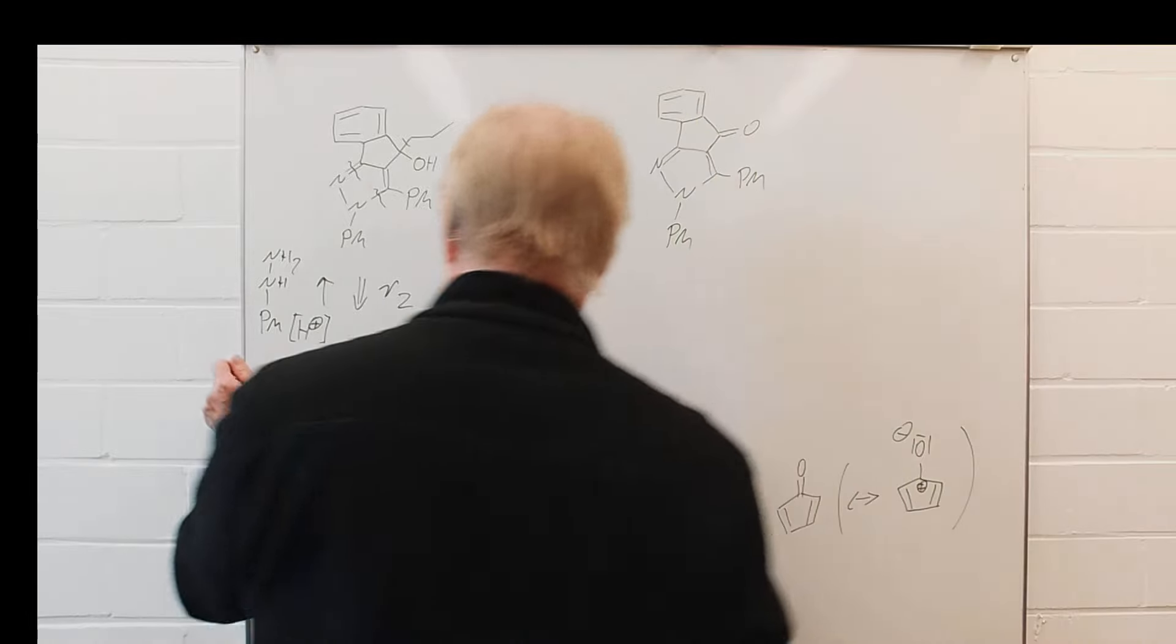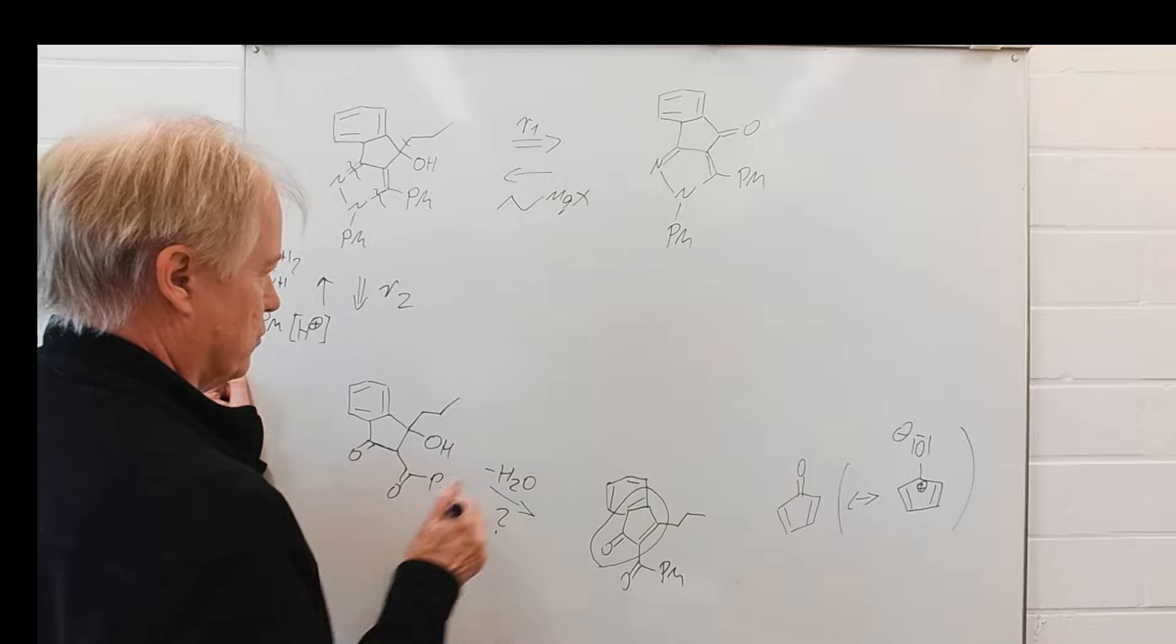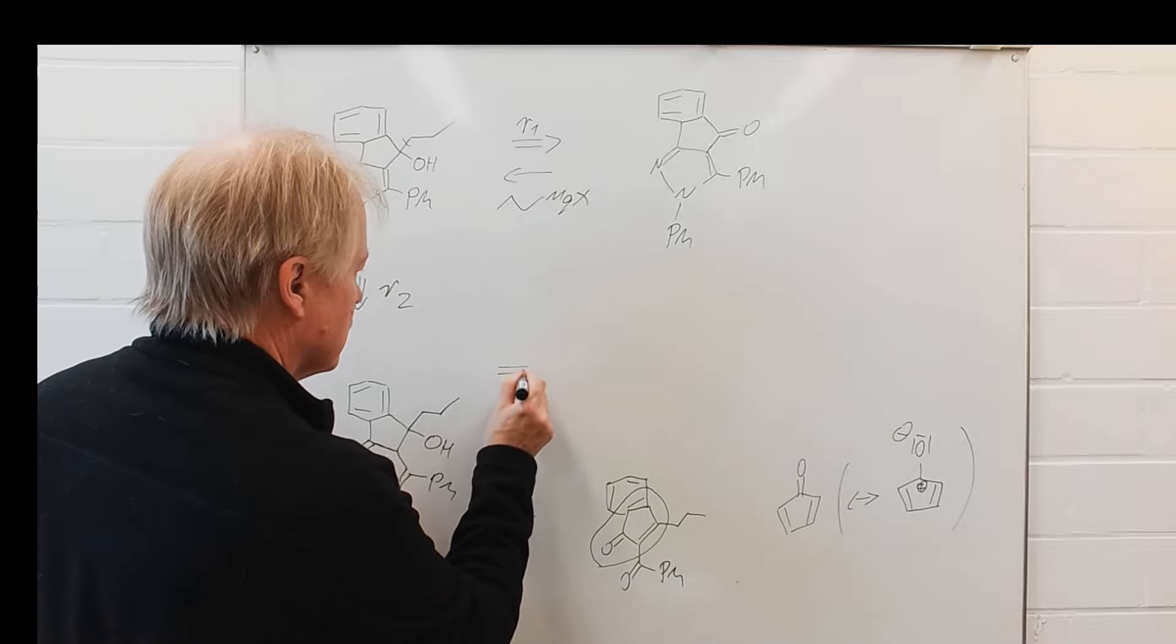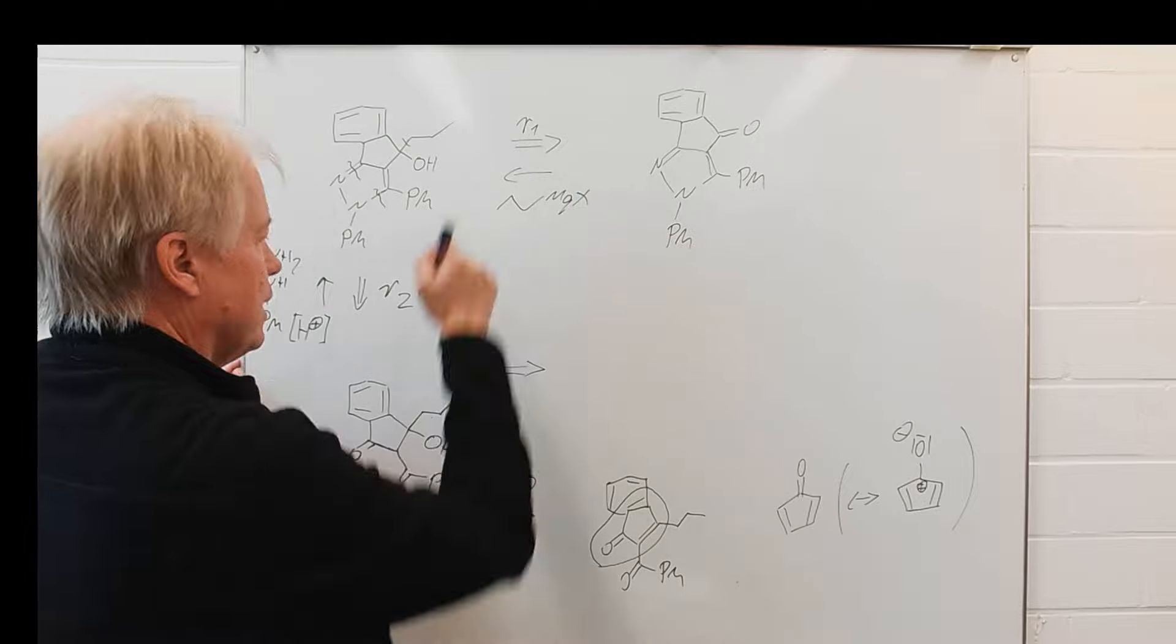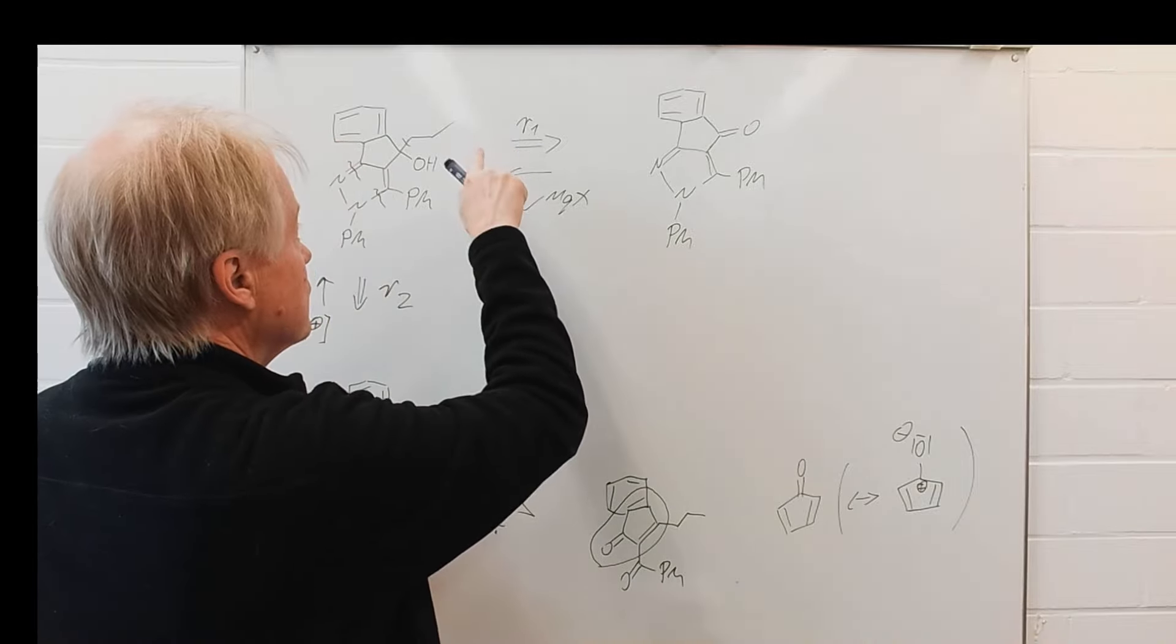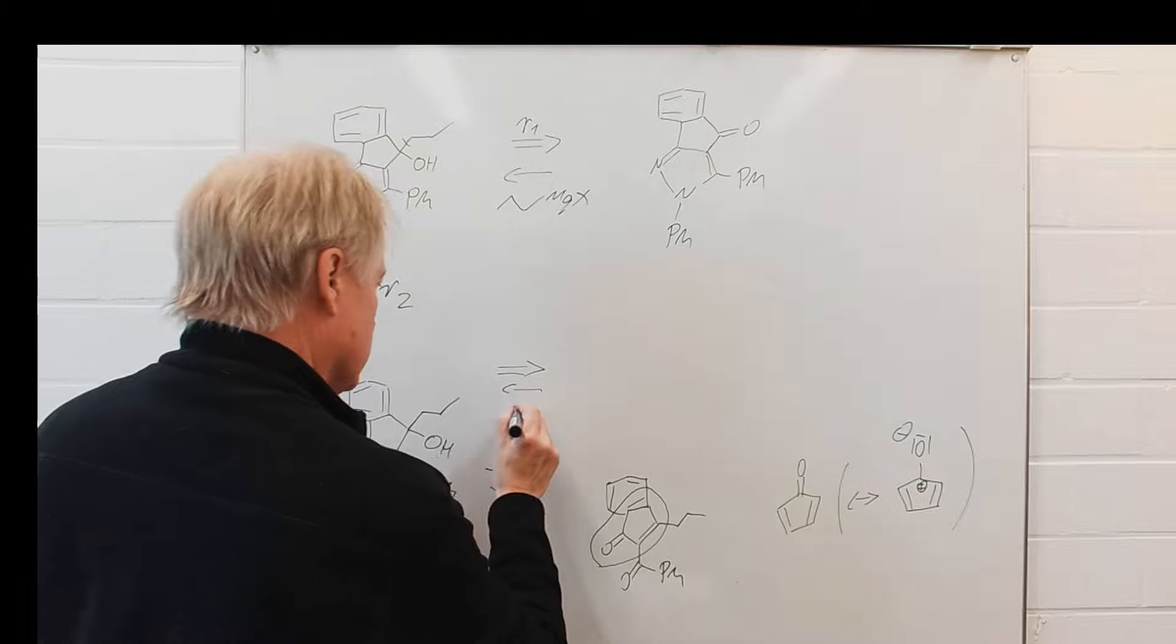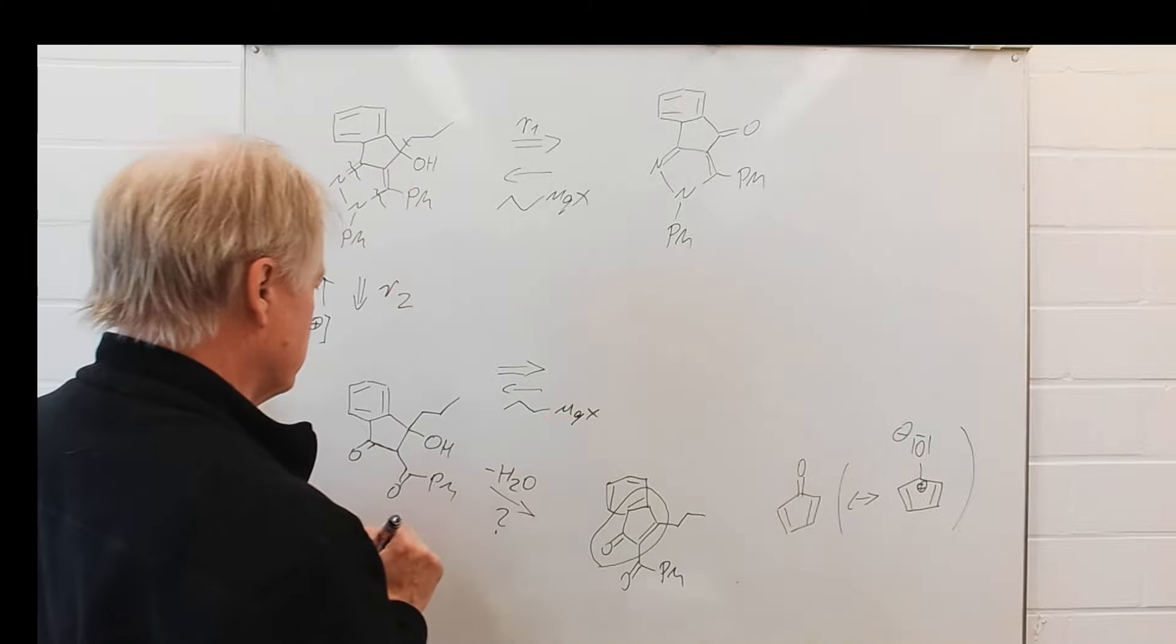Well, nevertheless, let's assume we have this structure. Next retrosynthetic step would be the same as here, above, in retrosynthetic path 1, making use of a Grignard reagent.